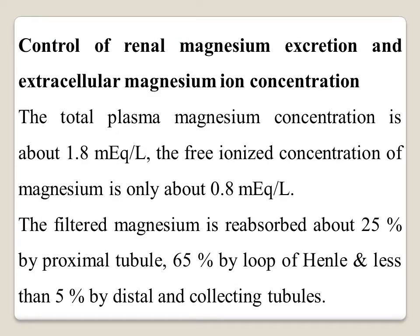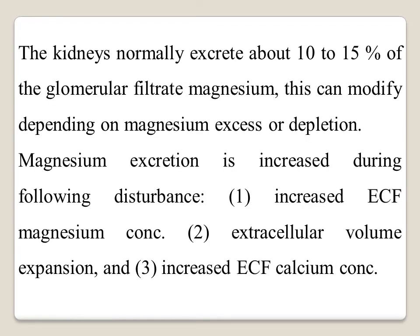Regarding control of renal magnesium excretion and extracellular magnesium ion concentration: the total plasma magnesium concentration is about 1.8 milliequivalents per liter, and the free ionized concentration is about 0.8 milliequivalents per liter. Of the filtered magnesium, about 25% is reabsorbed by the proximal tubule, 65% by the loop of Henle, and less than 5% by the distal and collecting tubules. The kidneys normally excrete about 10 to 15% of the glomerular filtrate of magnesium, modified depending on magnesium excess or depletion.